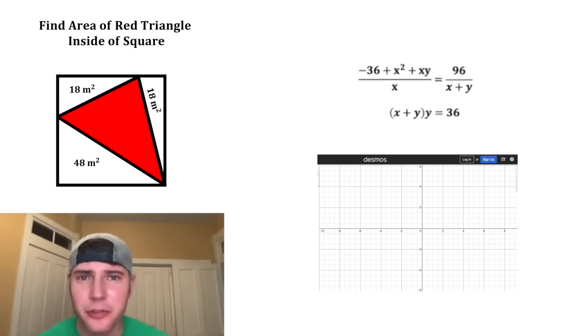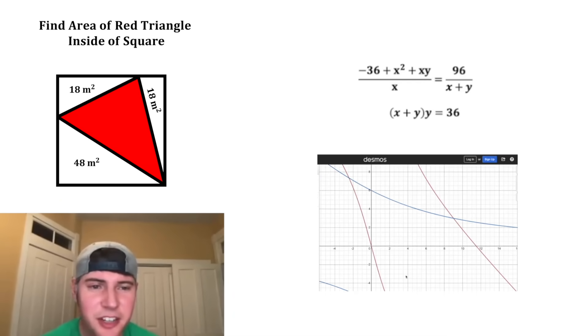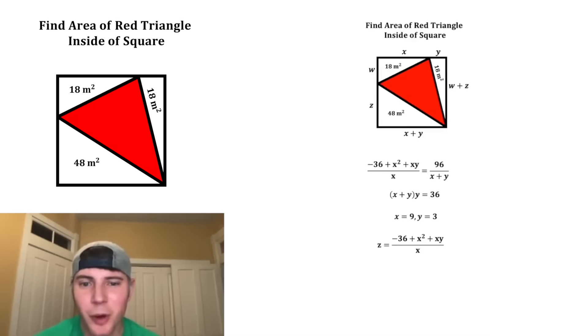If we graph these two, it's going to be far easier to see the solution. Here we are in the Desmos grapher. Our two equations, we can see they intersect in a couple of places, but this won't matter because we can't have a negative value. We're only interested in quadrant one. It looks like this is our solution right here: 9, 3 is the intersection point. So we know that x equals 9 and y equals 3. We can now solve for z because we can plug in 9 for the x's and 3 for the y, and we can then solve this to find out that z is equal to 8.